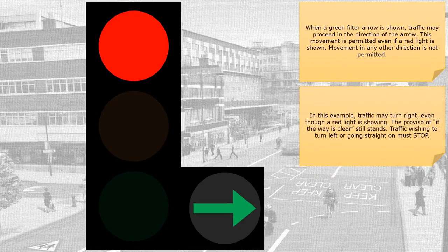In this example, traffic may turn right even though a red light is showing. The proviso of 'if the way is clear' still stands.